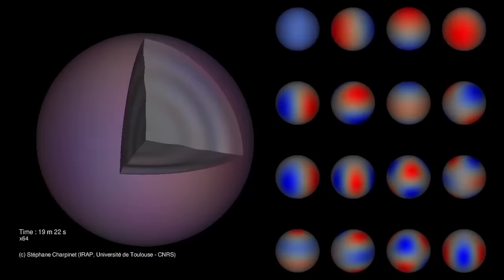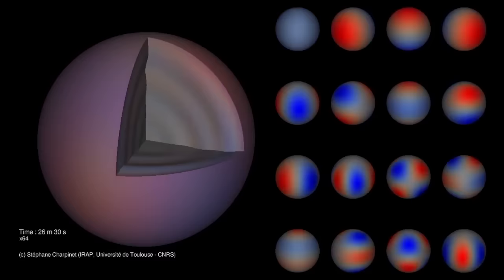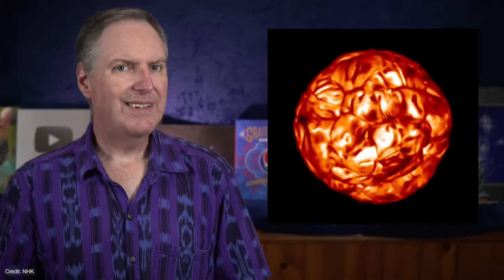But stars are complex and usually have multiple pulsations going on at once. Betelgeuse's light curve suggests it has four periods of 2200 days, 420 days, and two shorter periods of 230 and 185 days. But those periods are approximate.